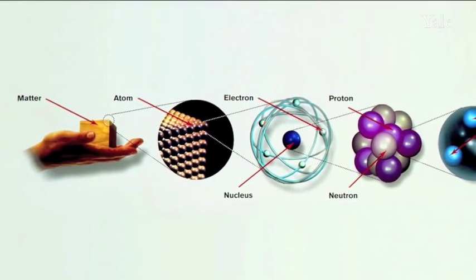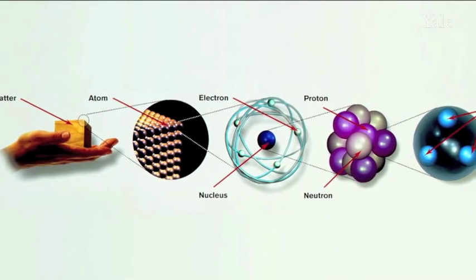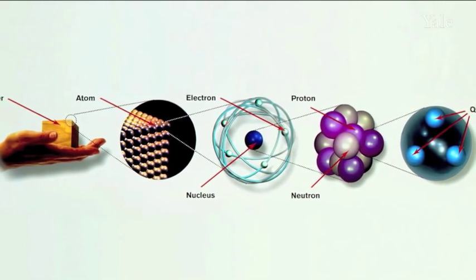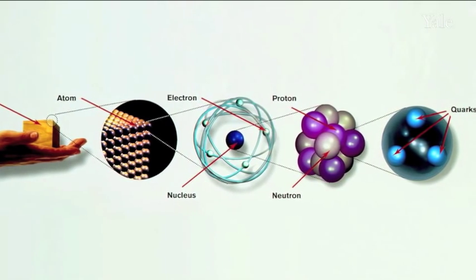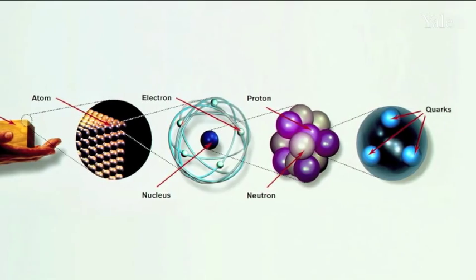Quarks and gluons are part of the fundamental constituents of matter. There are different types of quarks that make up what we see as particles, and gluons hold the quarks together, which are the constituents of the particles that we know.